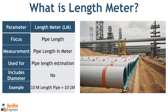Finally, length meter. This one is the simplest — it's just the total length of the pipe in meters without worrying about the diameter. For example, if the pipe is 10 meters long, the length meter is simply 10 meters of pipe length. It's straightforward and is typically used for things like transportation or installation where only the length matters.